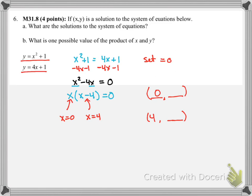As I decide which one to plug into, I think it's easier to plug into the bottom one because there's not a squared in it. So I have Y equals 4 times 0 plus 1. Y is equal to 1, and that 1 goes in this upper ordered pair.